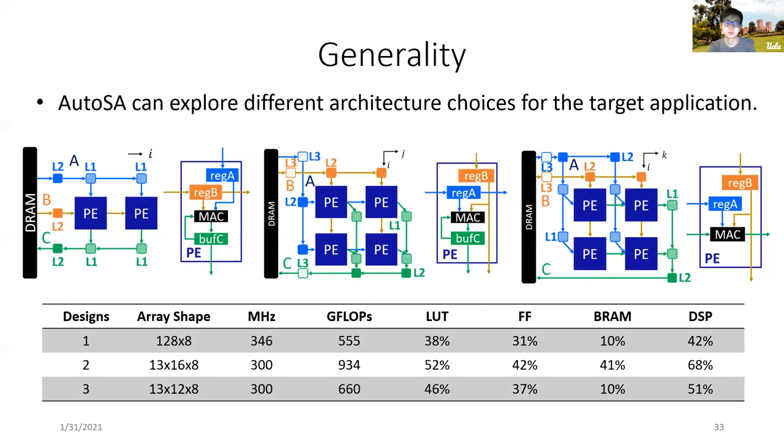The last one is also a two-dimensional array. However, the data of matrix C is no longer accumulated inside PEs. Instead, we transfer intermediate results across PEs, and the final column PEs emit the final results. The table shows the best results we have achieved on the target FPGA for these three designs. Overall, we found the second design achieved the best performance. In comparison, one-dimensional array limits the design space with only one space dimension to explore.